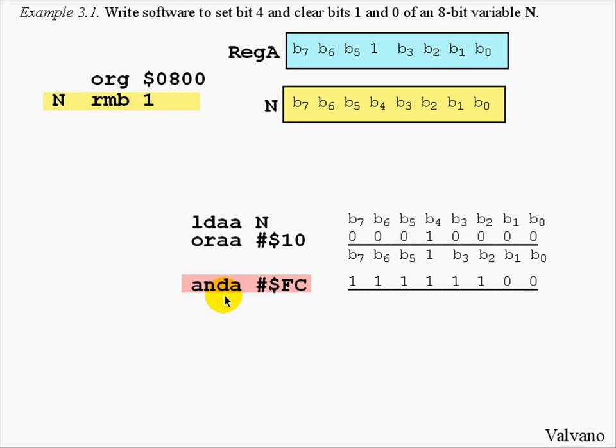Next, we'll AND register A with the constant $FC. Again, the pound means constant, the dollar sign means hexadecimal. And FC is the number, shown here in binary as 11111100. Notice there are zeros in this constant in the positions that I want to clear the bits. The result of the AND operation will be to clear bits 1 and 0 as desired.